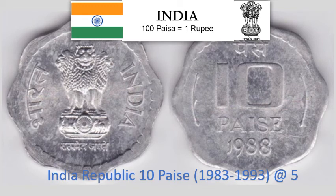India Republic 10 Paise 1983–1987. 1.8 gram Aluminium scalloped coin with 8 notches, 23 mm diameter. Krause Reference No. 39. Approximate market value Rs. 5.